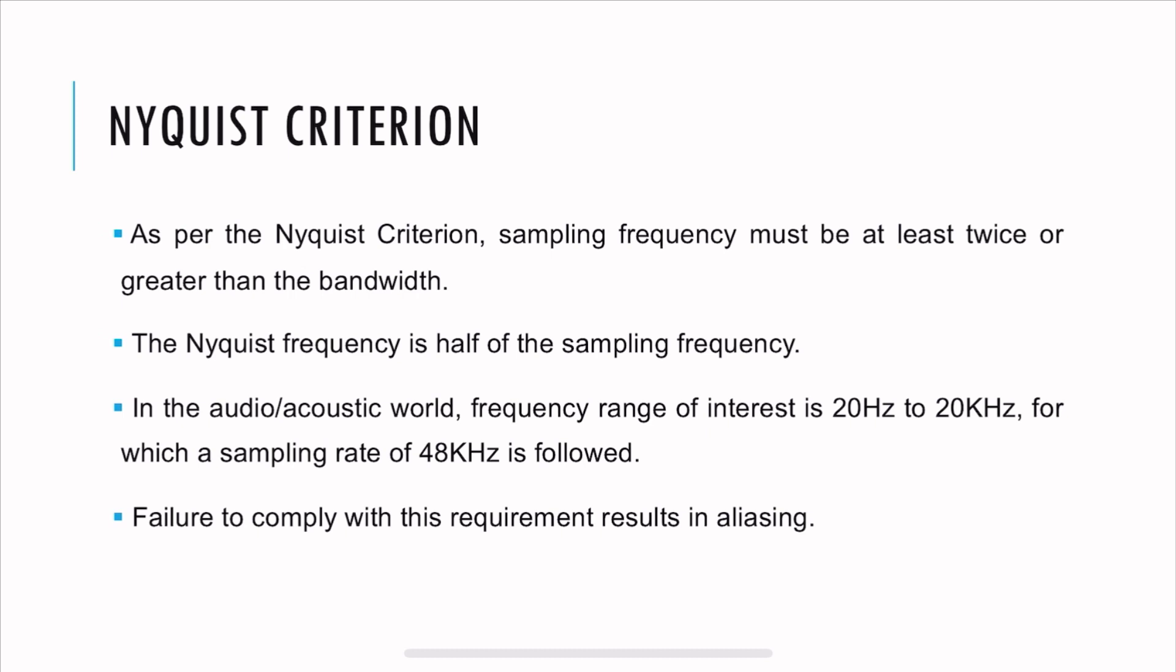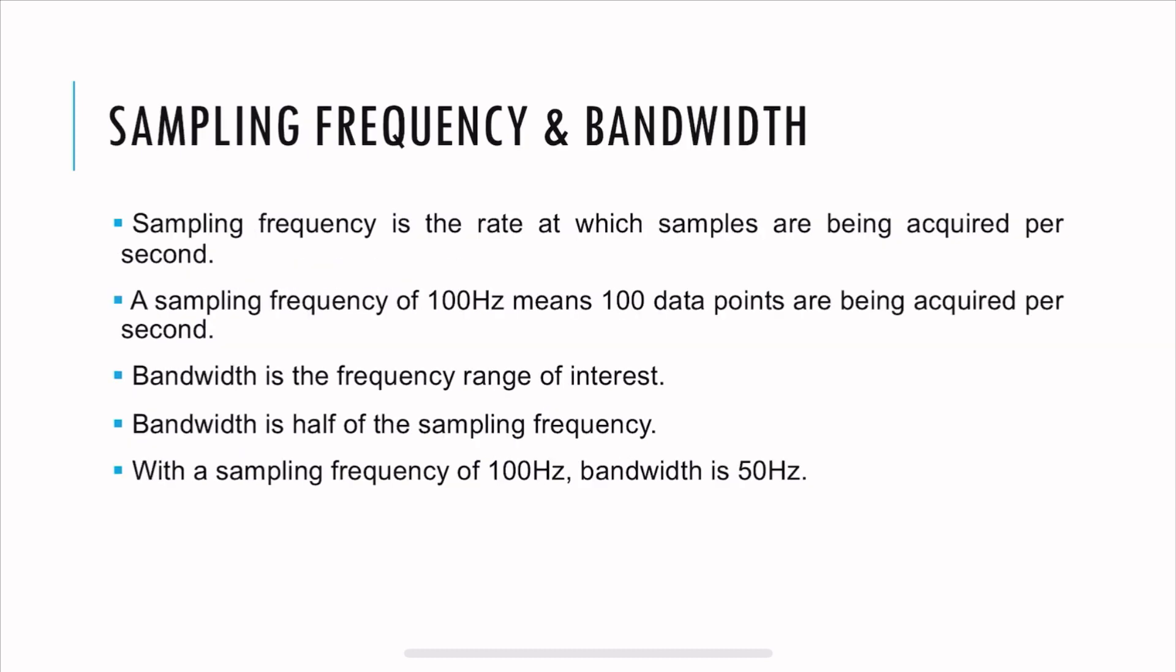The Nyquist criteria is very important to prevent aliasing. As per this criterion, sampling frequency must at least be twice or greater than the bandwidth. And the Nyquist frequency is half of the sampling frequency. So here, with the sampling frequency of 100 Hz, the Nyquist frequency is 50 Hz.